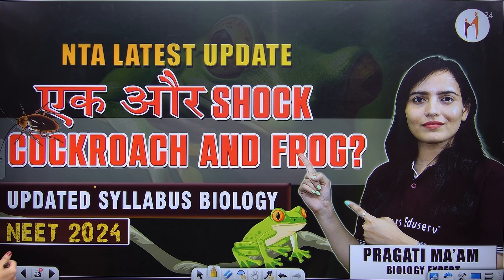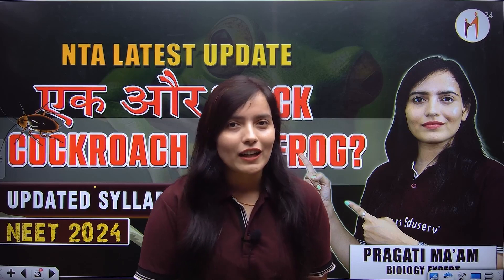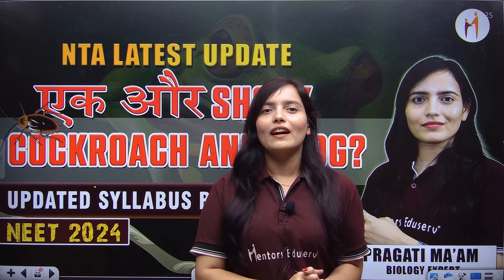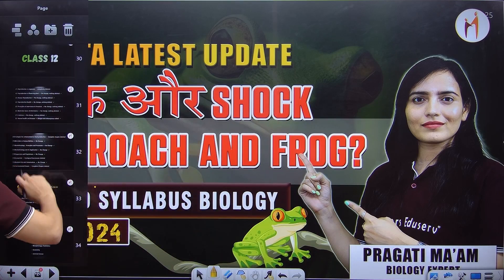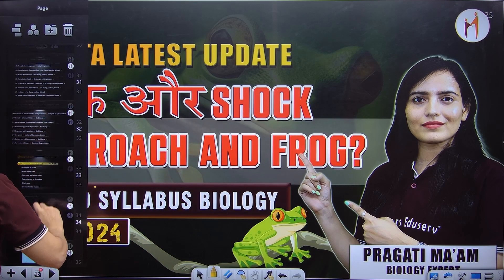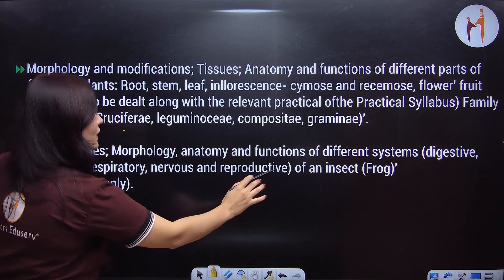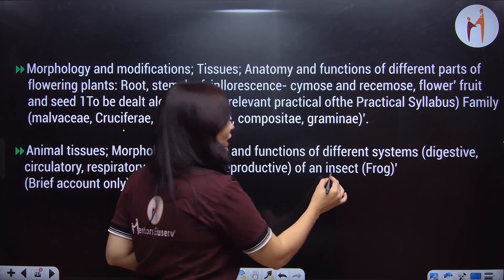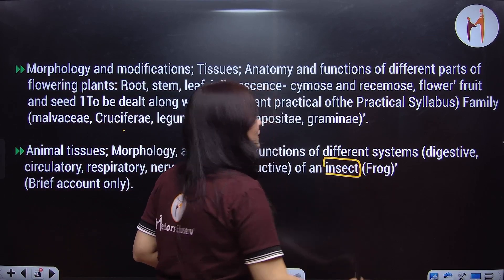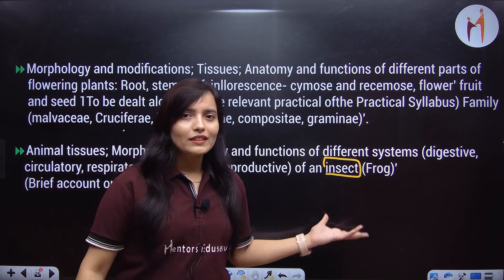There was another shock here. There was a lot of confusion regarding Cockroach and Frog. What will happen in the middle of the book? Because the NMC updated the syllabus on 6th October. It was written in the syllabus in front of the frog entry, and the insects seemed like it was a silly mistake.